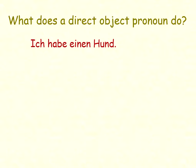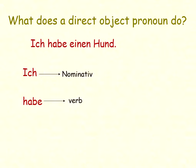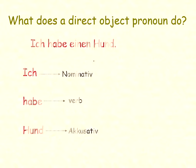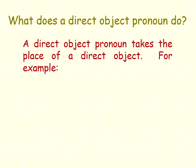Let's look at a sentence like 'Ich habe einen Hund.' Here 'Ich' is used as nominative, or a subject. 'Habe' as we know is the verb. 'Hund' is an accusative direct object — that is what we call it in German language. And how does a direct object pronoun take the place of a direct object?